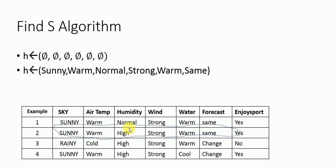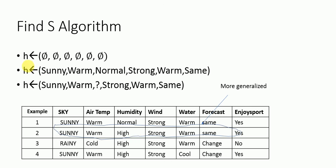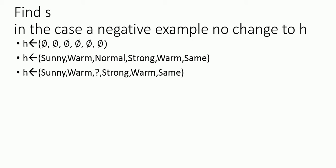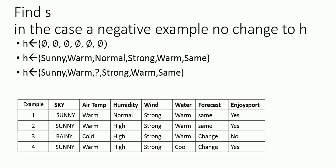For the second instance, if the attribute value is the same, do nothing. If the constraint has changed, replace it with a more generic value. So 'normal' and 'high' are replaced with a question mark. This new hypothesis is more general but still satisfies both the first and second instances.